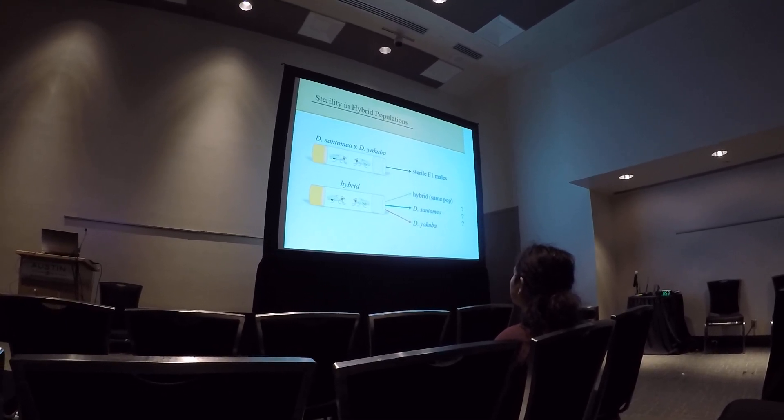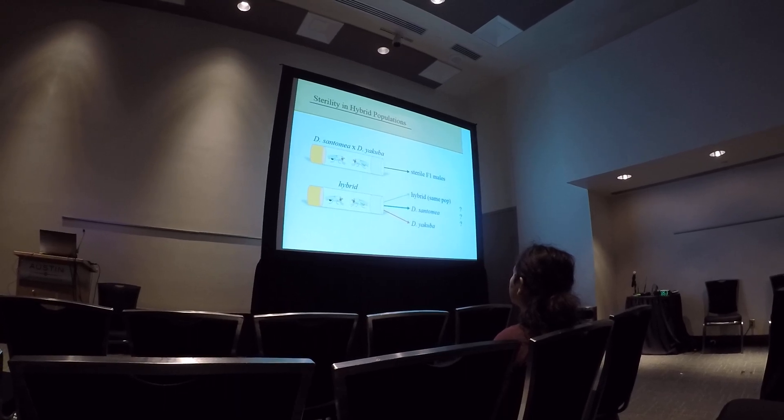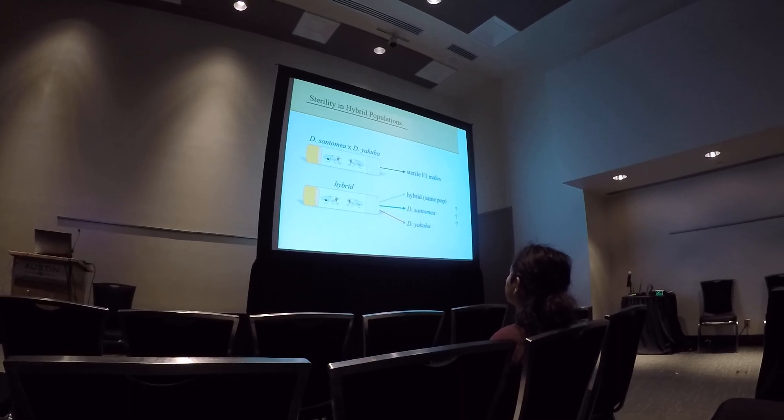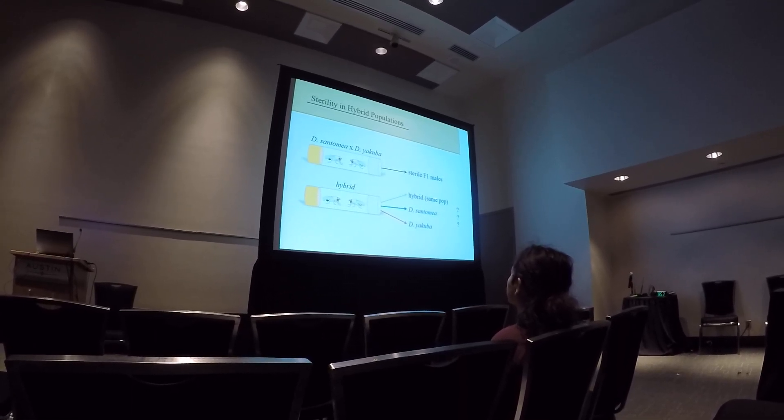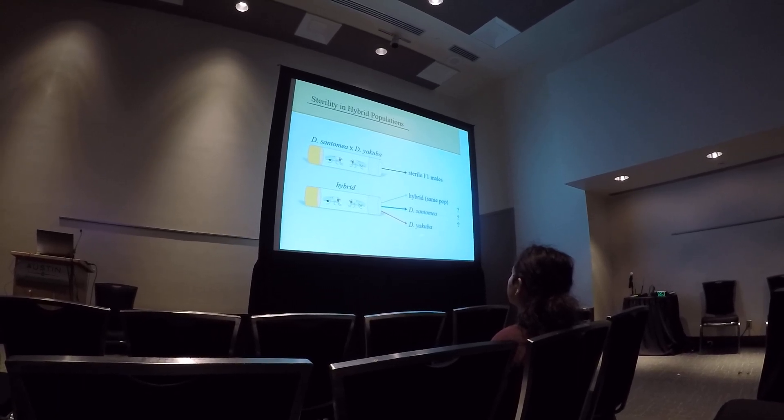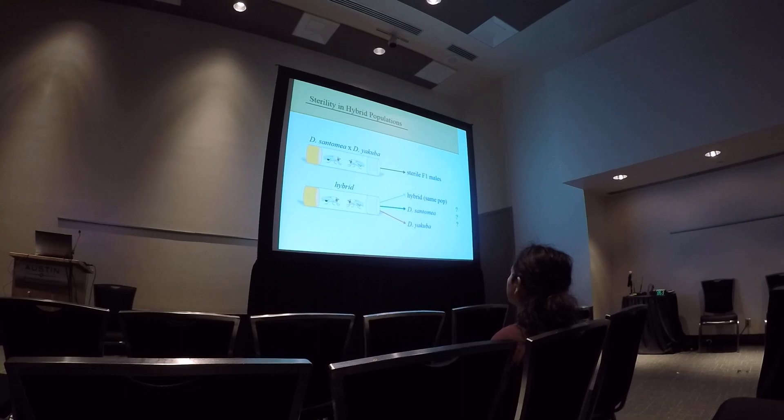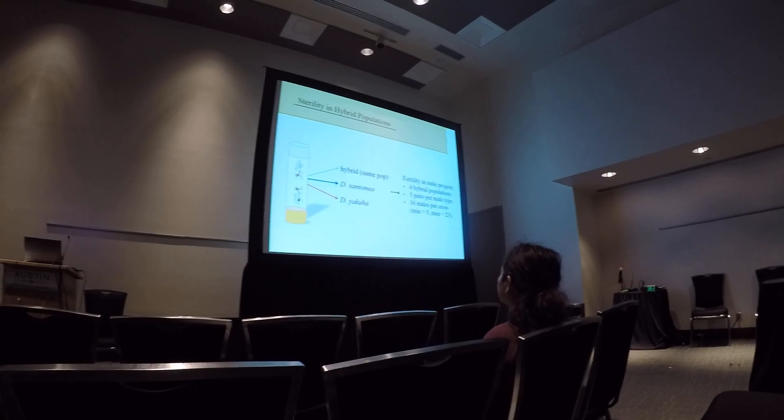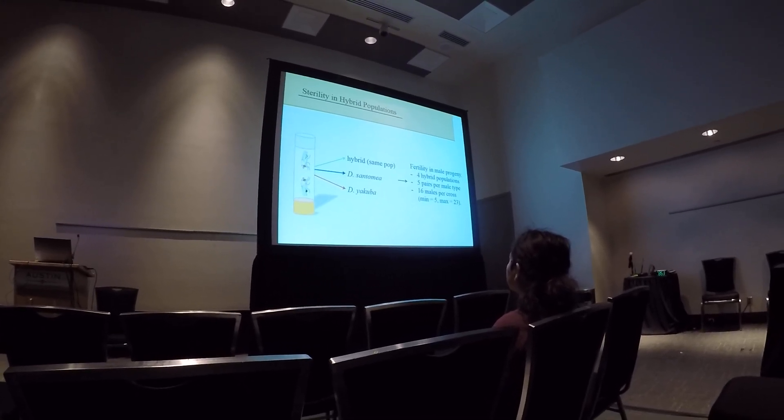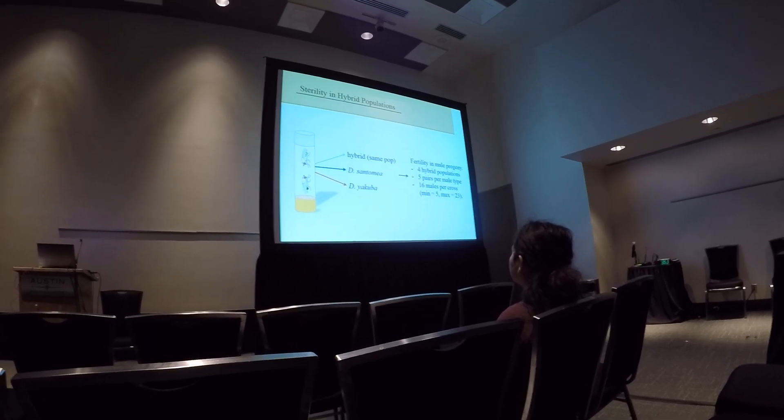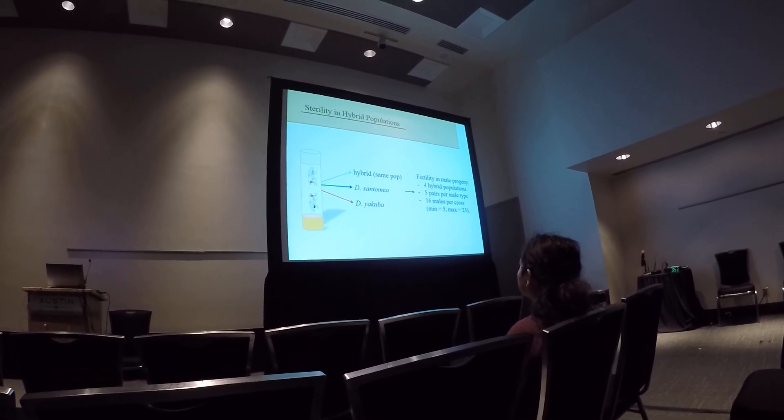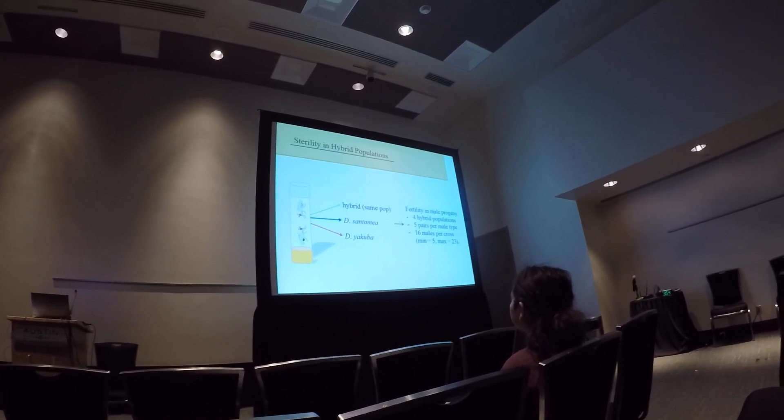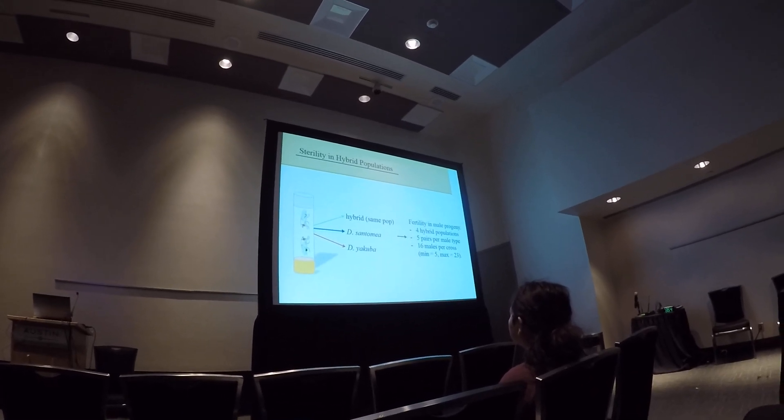So the last thing we looked at was hybrid sterility in these populations. And so when you cross the pure parentals, santomea and yakuba, F1 male hybrids are completely sterile. So what we did is we took the hybrid females and we crossed them to either, as with the mate choice, either the hybrid from the same population or one of the parentals, and then we scored F1 males of these crosses and determined whether the males were fertile or sterile. We did this for four of the 16 populations so far. We looked at at least five pairs per female-male genotype combination. And then of those individual crosses, we scored at least 16 males per cross, with a minimum of five and a maximum of 23.